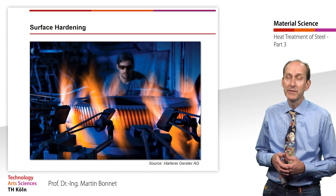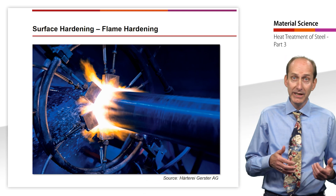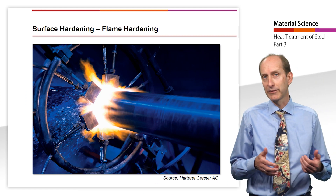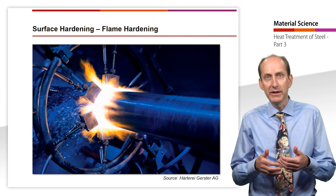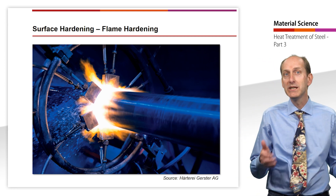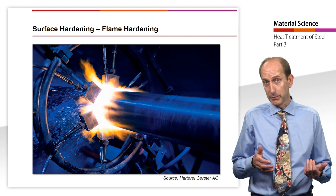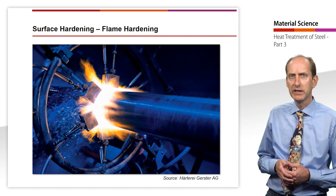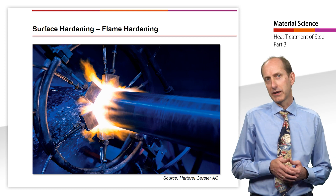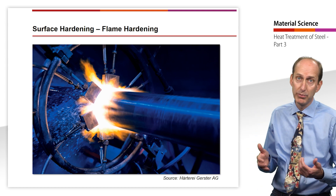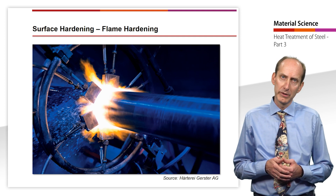Flame hardening and induction hardening have the greatest technical significance. The rapid heating of the surface is achieved during flame hardening with gas burners. Since the heat should not be distributed in the component, it is quenched with a water spray immediately after heating. The thickness of the hardened layer can be adjusted via the burner capacity. The process is usually carried out with the simplest of means, but sometimes also fully mechanically. It can be used for large components for which other hardening methods are technically not reasonable or economically justifiable.